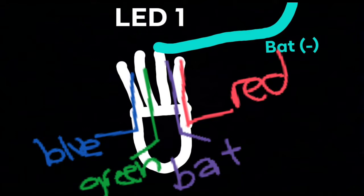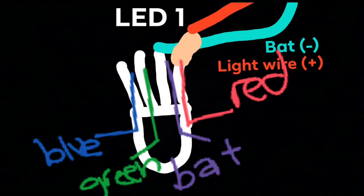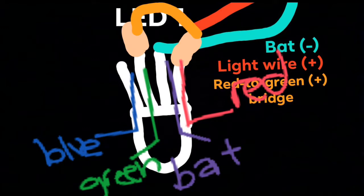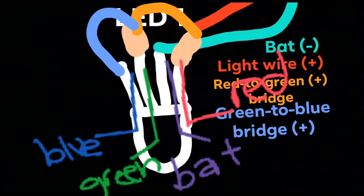So step one: connect the negative battery wire to the common side. Step two, put the positive light wire to the red side and put a resistor on the red side. You may have to play around with the resistors to get the desired color. Step two, put a resistor on the green side and bridge the red to the green with the wire.